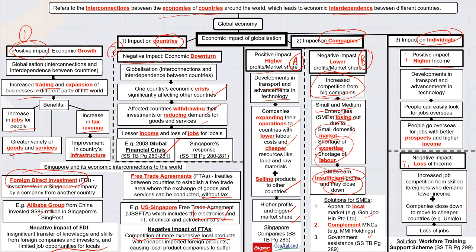For individuals, a positive impact is the ability to earn higher income. You are no longer restricted to working in one country — with transport and technology you can move abroad or work remotely for overseas companies. For example, you could work for a US company from Singapore. People can choose from a wider pool of jobs and earn more. However, the flip side is that people from overseas can also come to Singapore and compete for jobs, possibly demanding lower wages, which means you could lose your job to foreigners or to companies relocating to cheaper countries like Vietnam or China.